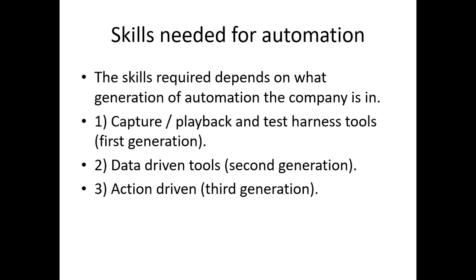Some automation processes are available. First is test tool selection, second is defining the scope of automation, third is planning, designing and development, fourth is test execution, and the final one is maintenance of the test cases. These are all the automation process steps.